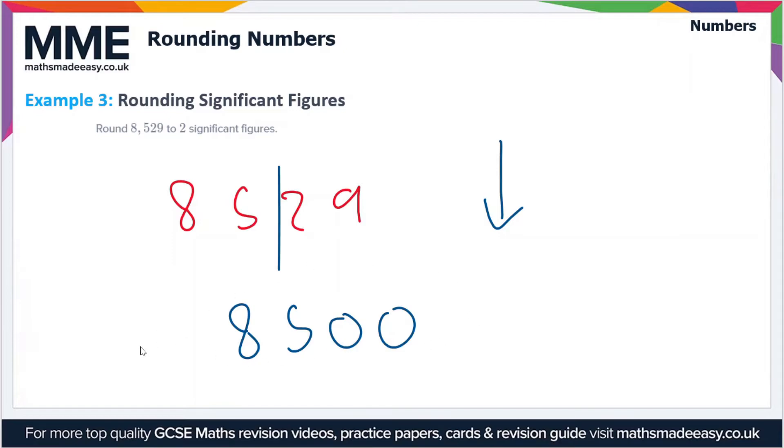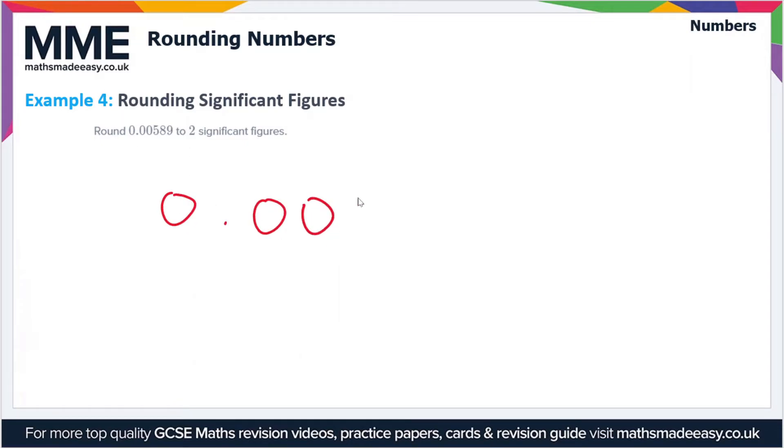Finally, we have to round 0.00589 to two significant figures. So this time we consider the 5 and the 8 as the first two non-zero figures. So these are the first two significant figures, and then the 9 is the third significant figure. We're going to have to round up in this case because it's more than 5, but here this 8 will become a 9. So we're left with 0.059.